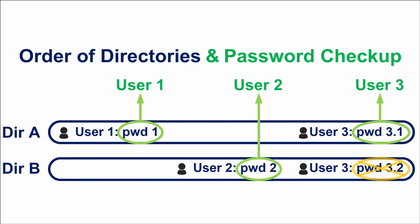Sometimes users with the same name can appear in several directories — external or internal. There is nothing wrong with this, but you should always remember that the order of your directories is very important. User passwords are taken from the very first directory. For example, after changing the directory order, it can happen that your users won't be able to log in with their current password.